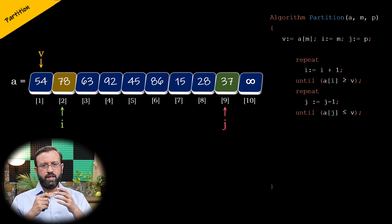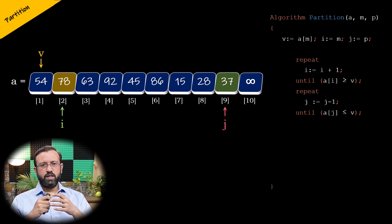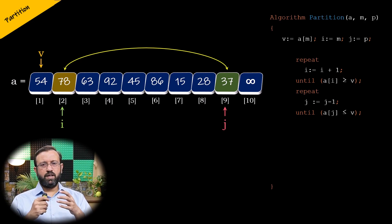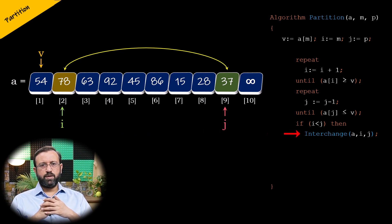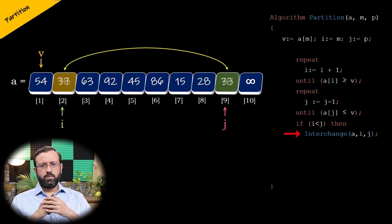Once we find the element at index i which is greater than the pivot element, and the element at index J which is smaller than the pivot element, then swap the element at index i with the element at index J. To do this, we will check if index i is less than index J. If this is true, then we will swap the elements using the statement interchange and pass the parameters A, i and J. This function swaps the elements present at index i and index J in array A.